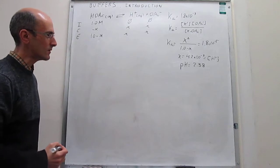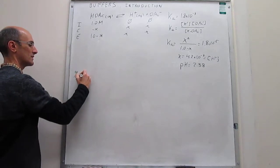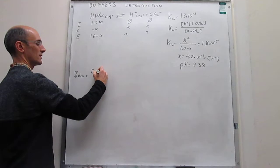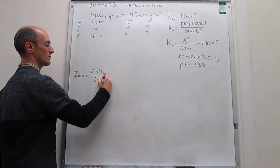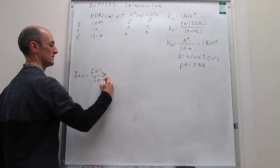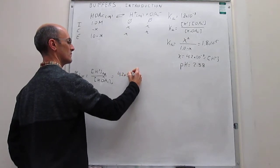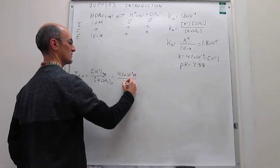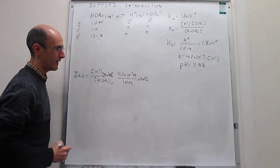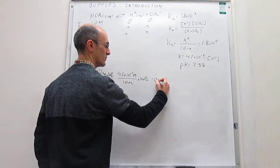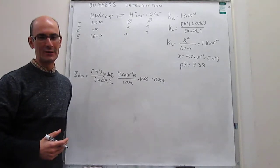We can also calculate the percent dissociation of the weak acid. The percent dissociation is the concentration of protons at equilibrium — 4.2×10⁻³ molar — divided by the initial concentration of the acid, 1 molar, multiplied by 100%. That gives a percent dissociation of 0.42%. You can see that very little of the acid has dissociated, which makes sense because this is a weak acid.